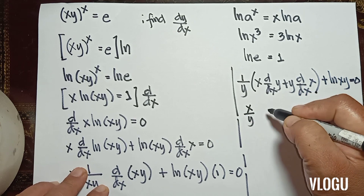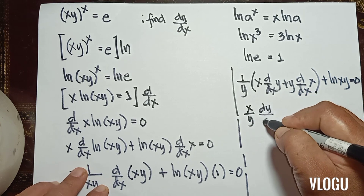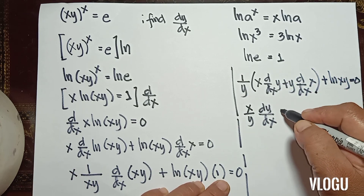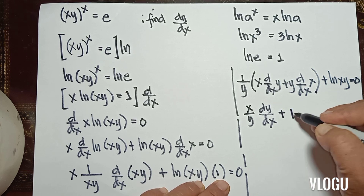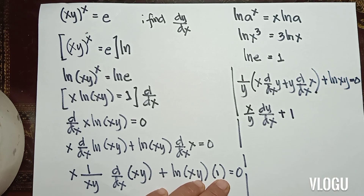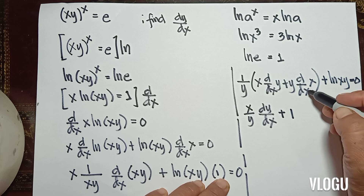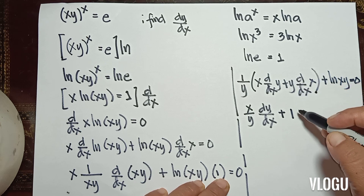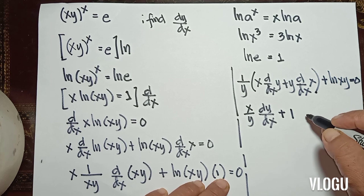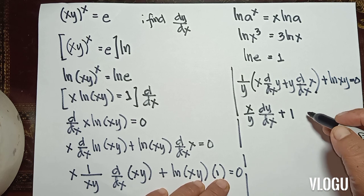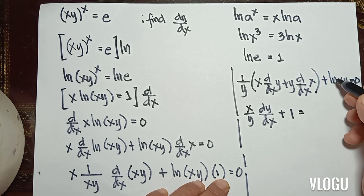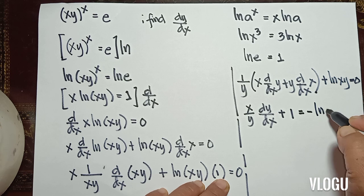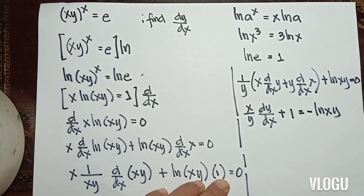Multiplying 1/y inside: x/y · dy/dx plus 1 · (y/y) which is 1. Then we transpose ln(xy) to the other side, giving negative ln(xy).